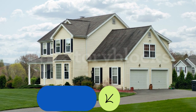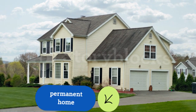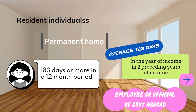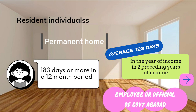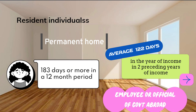A resident individual must first have a permanent home in Uganda. Secondly, a person can be considered a resident individual if they spend a significant amount of time in Uganda. There are two scenarios: if an individual is present in Uganda for a total of 183 days or more in any 12-month period that starts or ends during the year of income, they are considered a resident individual. Alternatively, if present during the year of income and averaging more than 122 days in each of the two preceding years, they also qualify. Lastly, an employee or official of the Government of Uganda posted abroad during the year of income is also considered a resident individual.